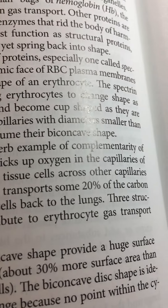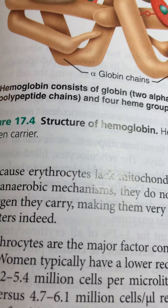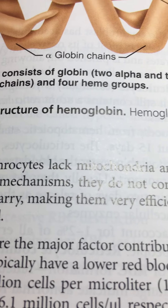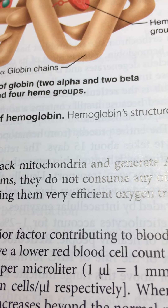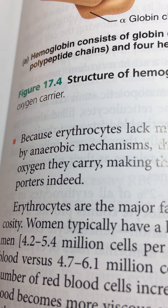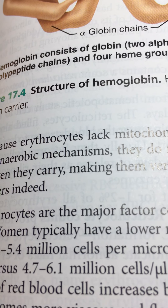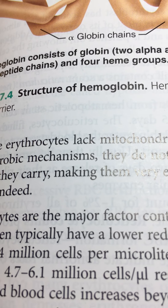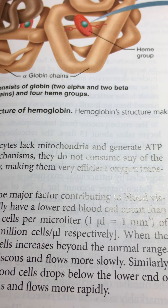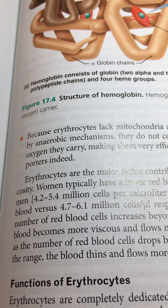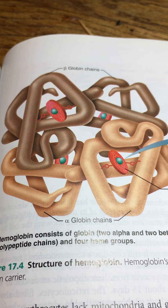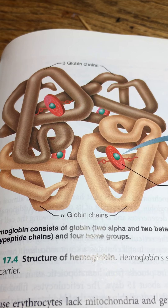Over on page 635, because erythrocytes lack mitochondria, they generate ATP exclusively by anaerobic mechanisms — metabolizing glucose and ketones — so they don't actually utilize the oxygen they're carrying. They're very efficient in that regard. Now we're talking about hemoglobin: it's a big protein molecule.